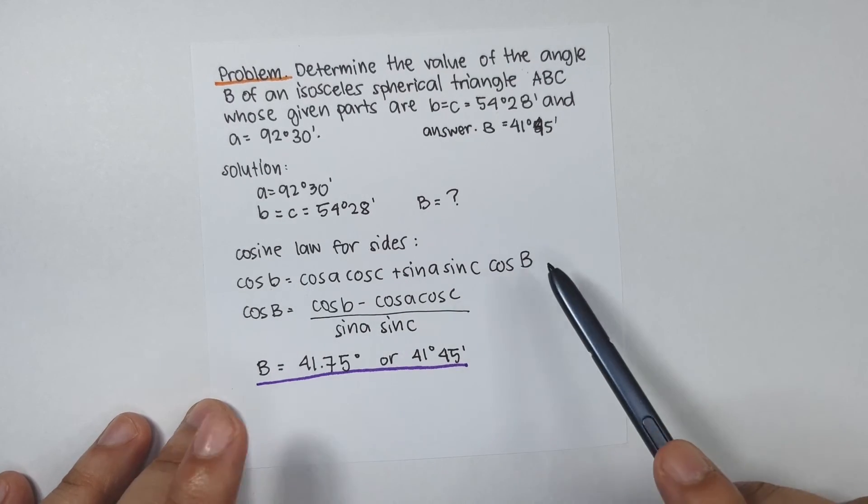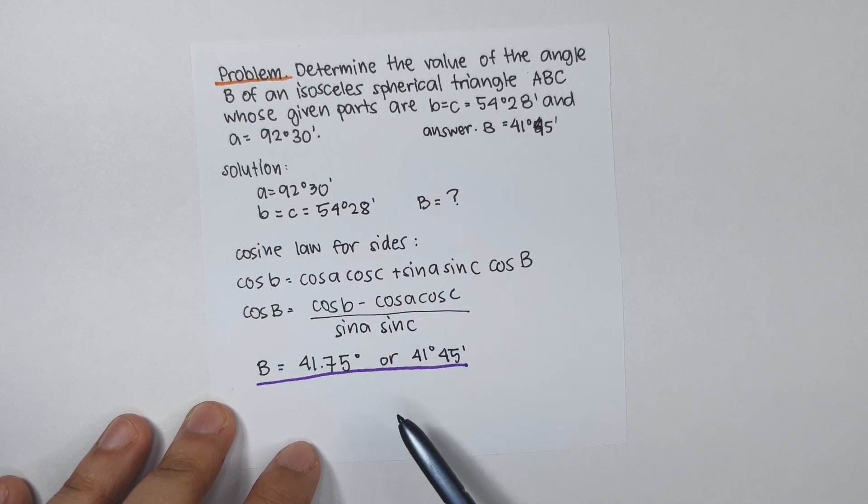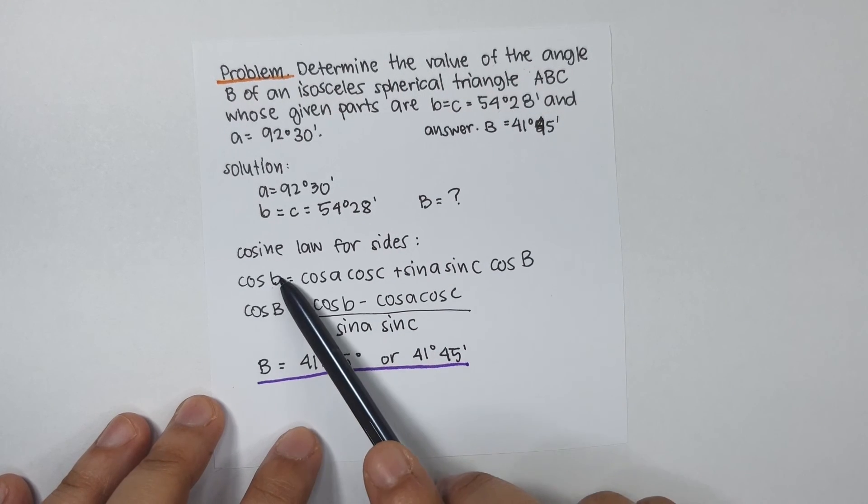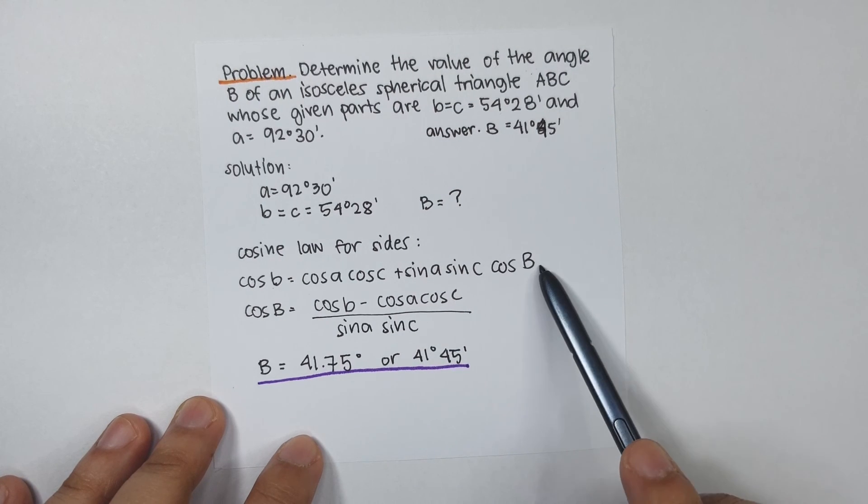If this is side B, then this here must be angle B. Then A, C, A, C. So, we know the values for B, A, C, A, C. Unknown is angle B. That is one equation, one unknown.